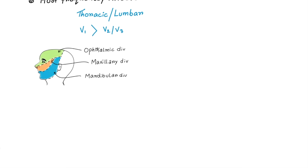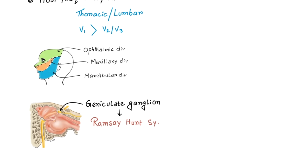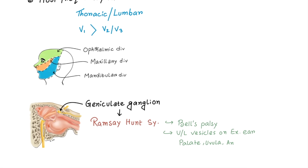Herpes zoster of geniculate ganglion is known as Ramsay-Hunt syndrome which is rare and it causes Bell's palsy, hemilateral vesicles on external ear, palate, uvula and anterior tongue area.